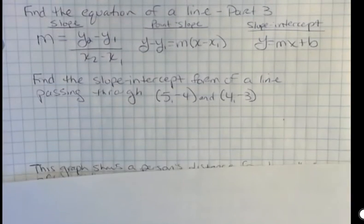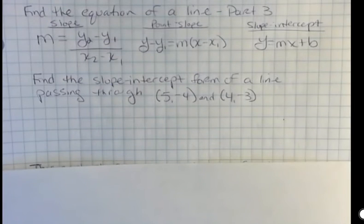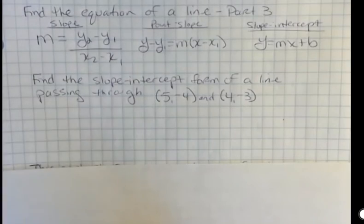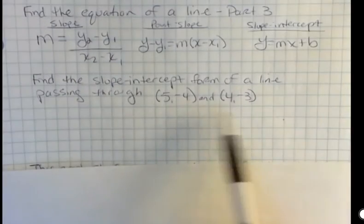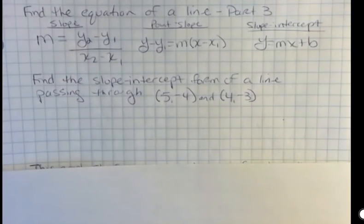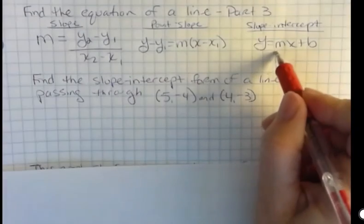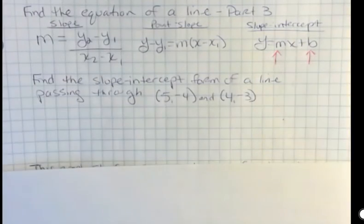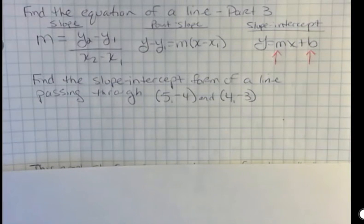Here's the new question. Find the slope intercept form of a line passing through two points. This is the most complicated type you're going to see in this class. We're just given two points, and we know that in order to find the slope-intercept form of a line, we need two things: the slope and the y-intercept. And right now we have neither. We don't know the slope, they didn't tell us the slope, and they didn't give us a y-intercept.